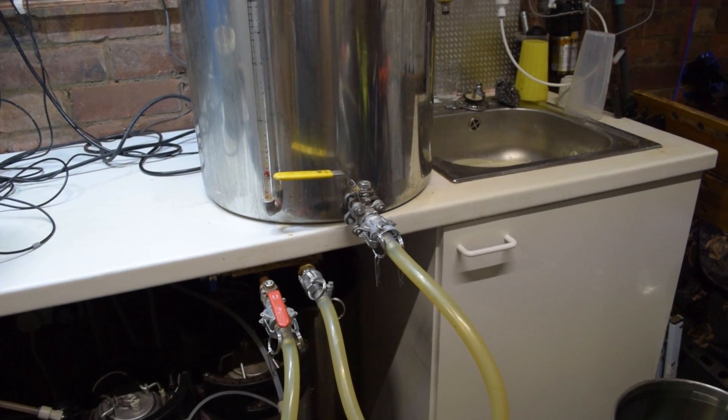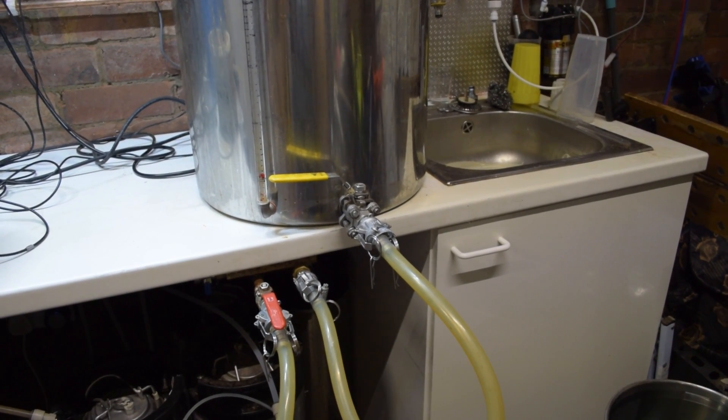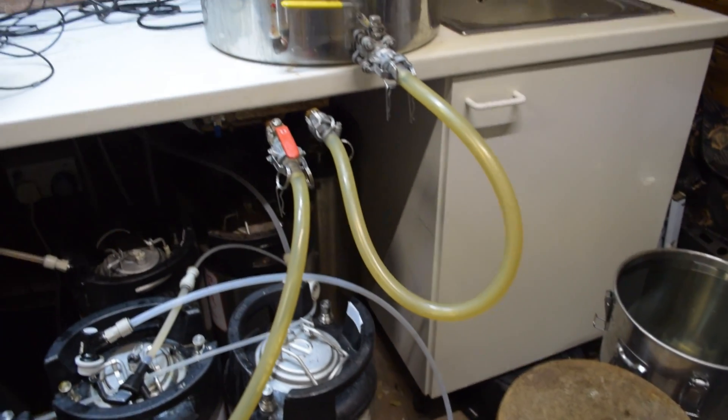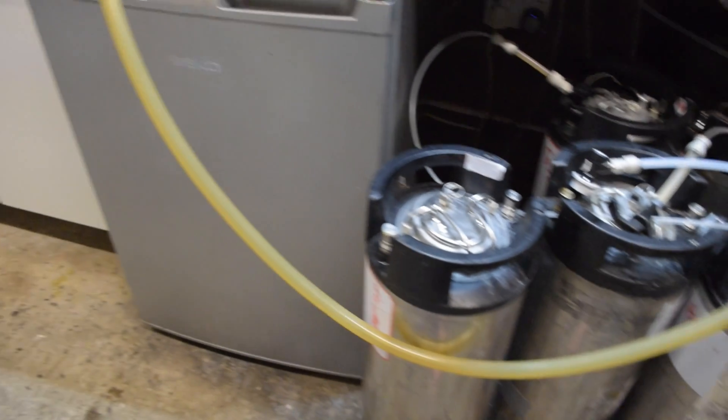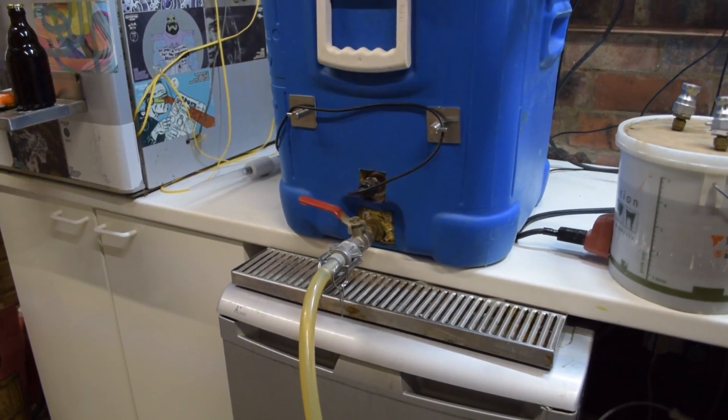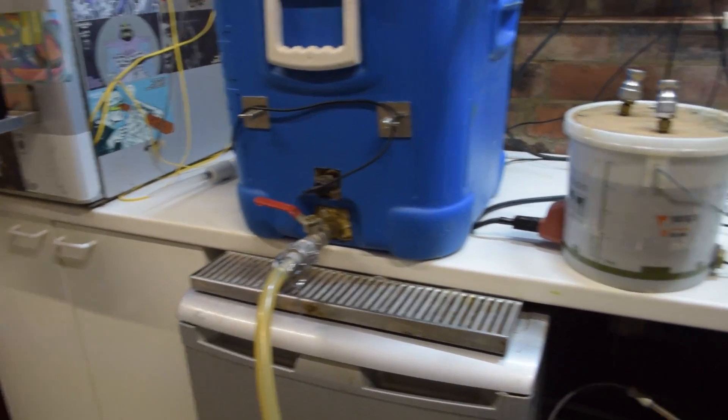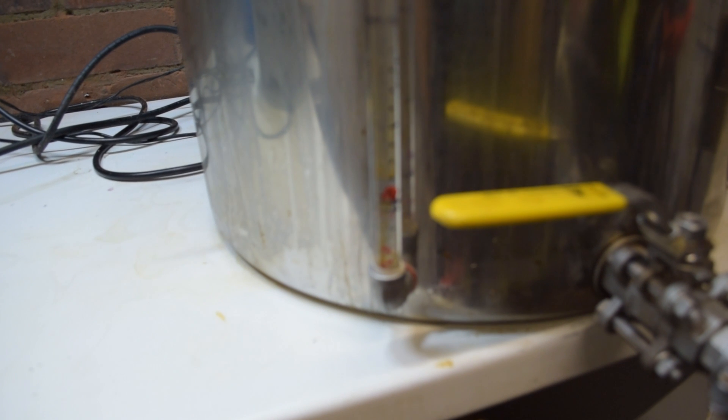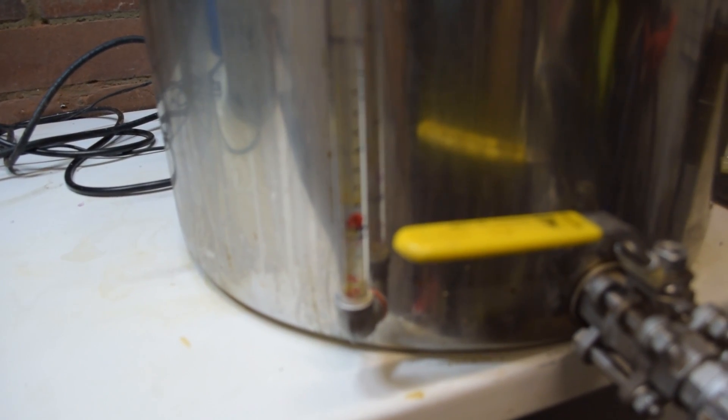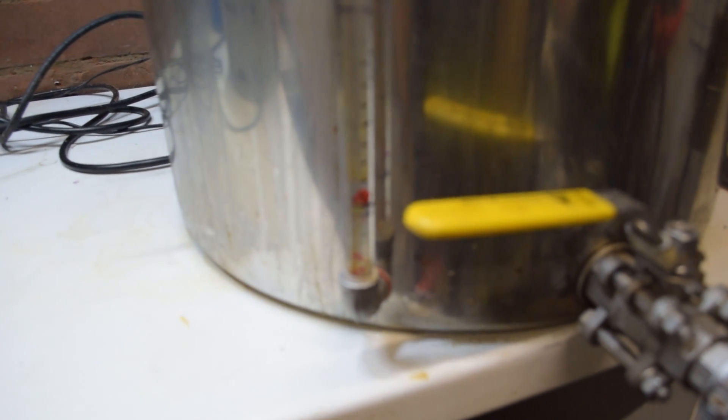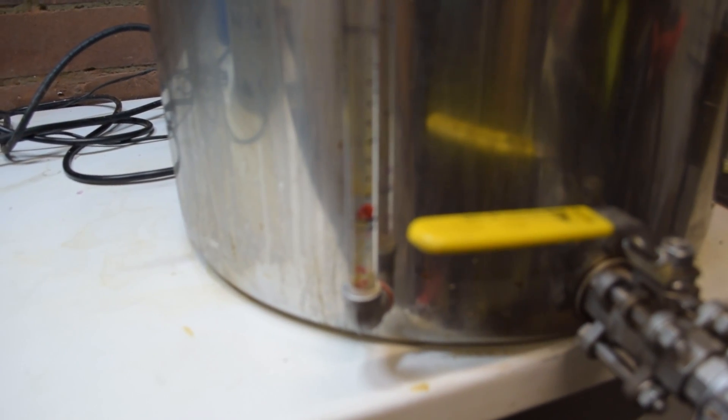So I usually, well almost always, under-let. So the HLT is connected down to the pump, and that is then connected with a long pipe down to the manifold inside the mash tun. On the sight tube, I've marked the level of water once I've finished mashing in with this massive brew.